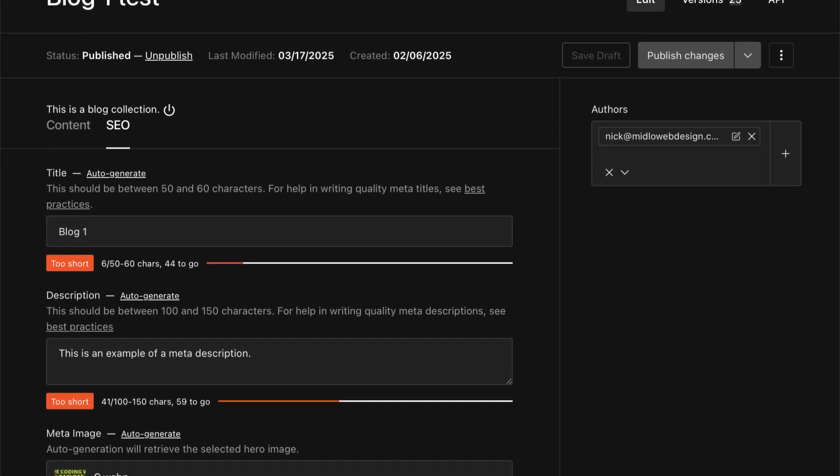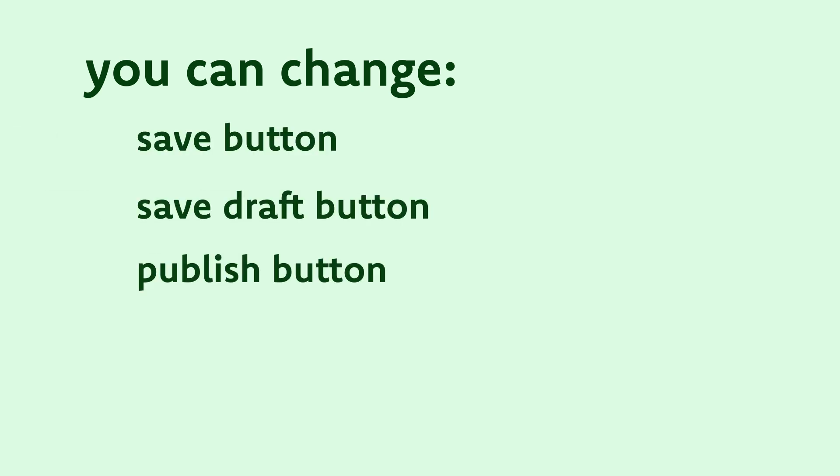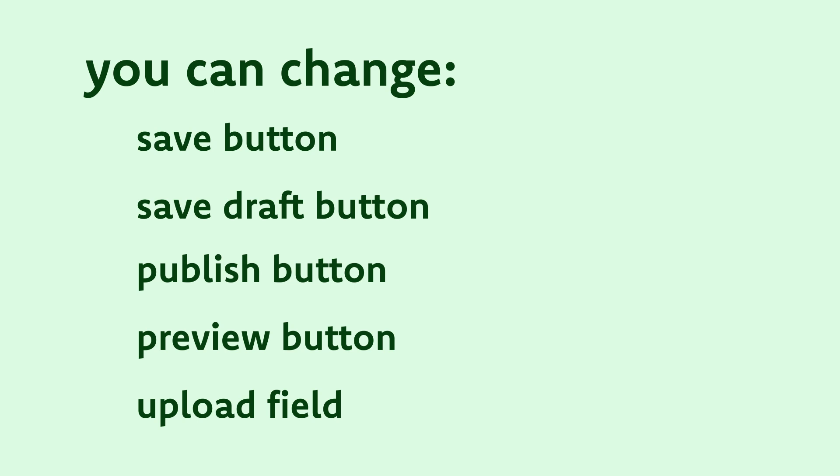There is one last option under admin components: edit. This prop lets you override certain elements in the edit view — the page you see when you click into an individual document. The components you create here change the same element across all documents. You have the ability to change the save button, save draft button, publish button, preview button, and the upload field. However, whatever change you make also changes the functionality of the current components provided by the PayloadCMS team, so I'd recommend avoiding these changes unless you know what you're doing and understand how to implement your own custom business logic.